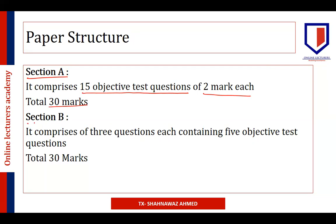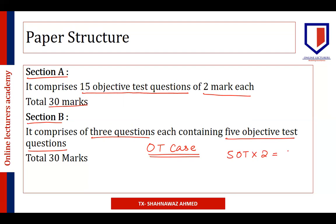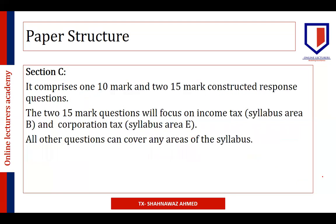Section B comprises three OT cases. Each question comprises a case against which five objective test questions are given, so each question has five questions at two marks each, totalling ten marks per question. Three questions at ten marks each gives 30 marks for Section B. Normally in Section B we can spot which topic a question is likely to come from.